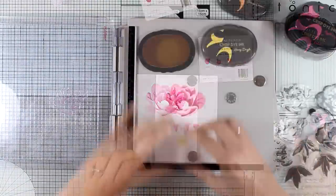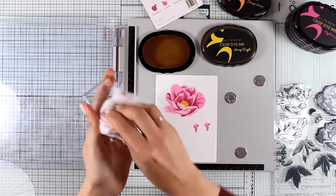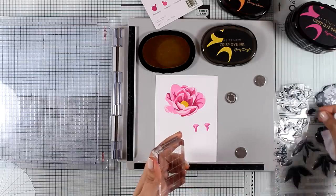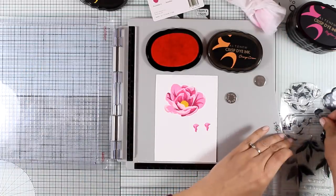Now I'm going to stamp the center of my flower. The center consists of two layers. For the first one I'm using Honey Drizzle and then I'm going to use Orange Cream to add the darker shades.